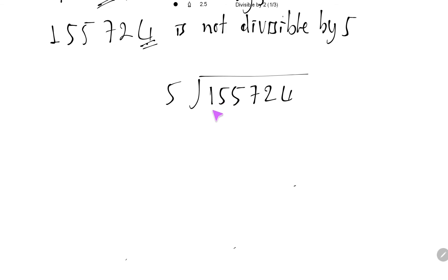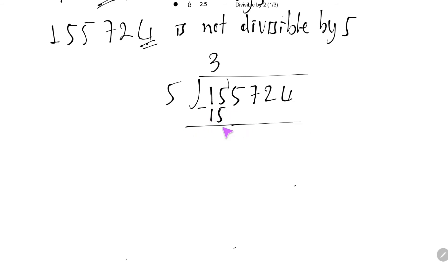15 divided by 5 is 3. So 3 times 5 is 15, then 15 minus 15 is 0. Then I put down number 5, and 5 divided by 5 is 1. 1 times 5 is 5, and 5 minus 5 is 0. And then I put down number 7.